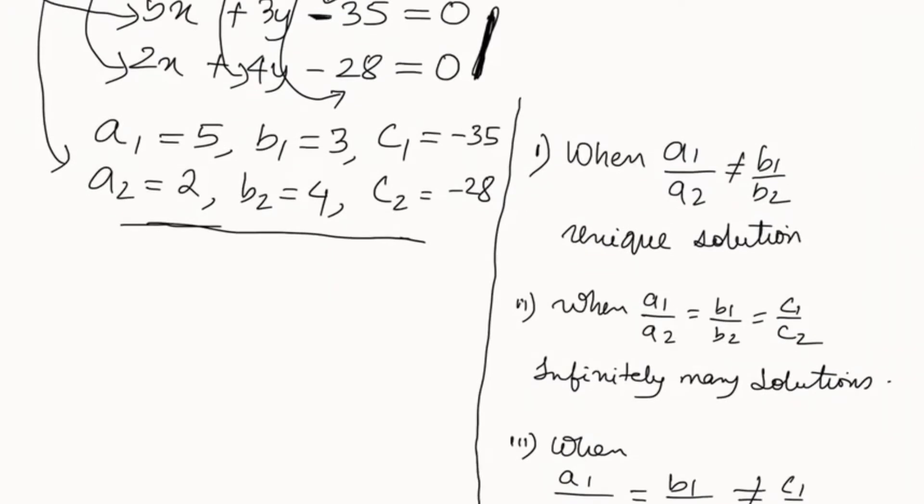The first is when a1 by a2 is not equals to b1 by b2, then the equations will have a unique solution. When a1 by a2 is not equals to b1 by b2, then we have a unique solution.